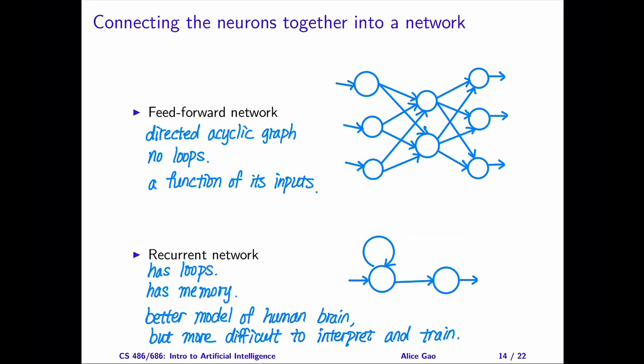Arguably, a recurrent network is a better model of the human brain because we have memory. Unfortunately, because of the loops, it's also more difficult to train a recurrent network and to interpret their meanings.